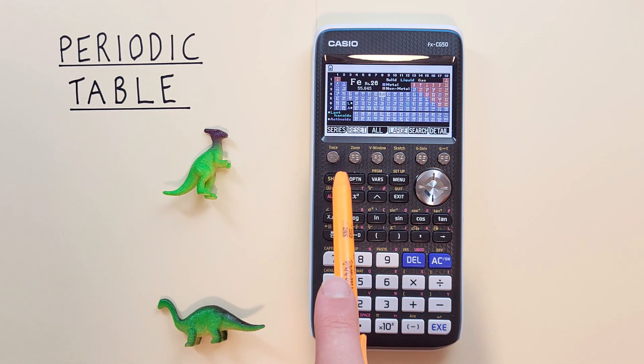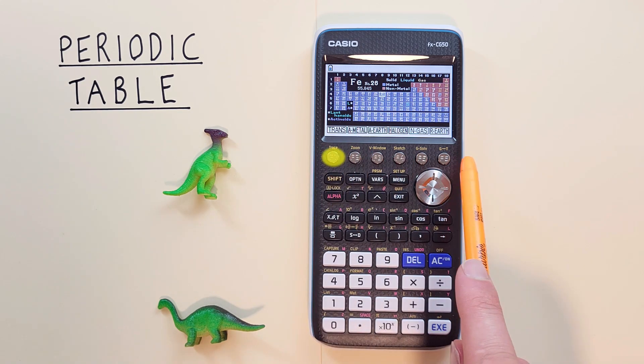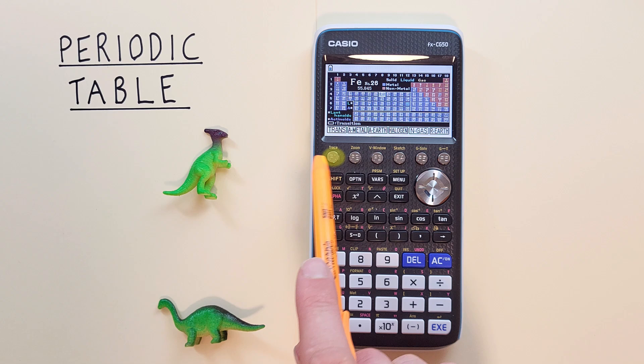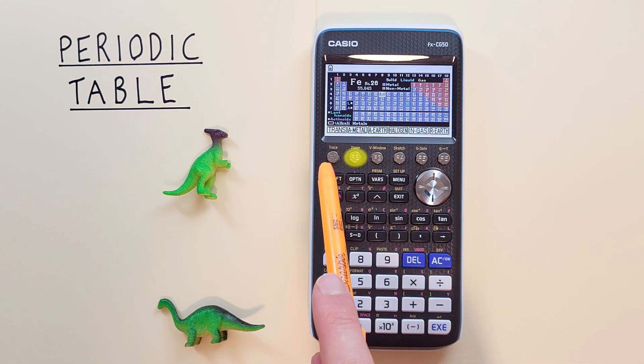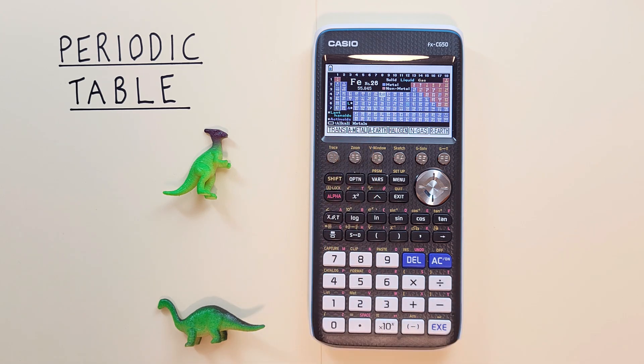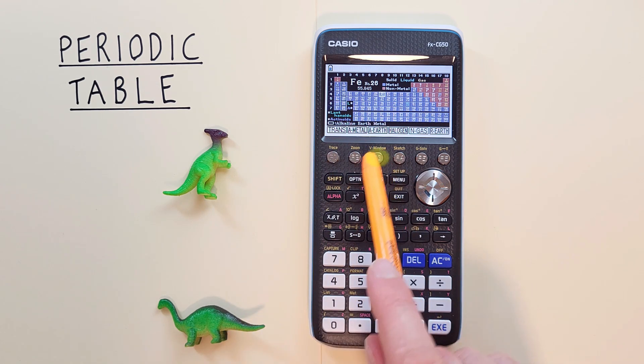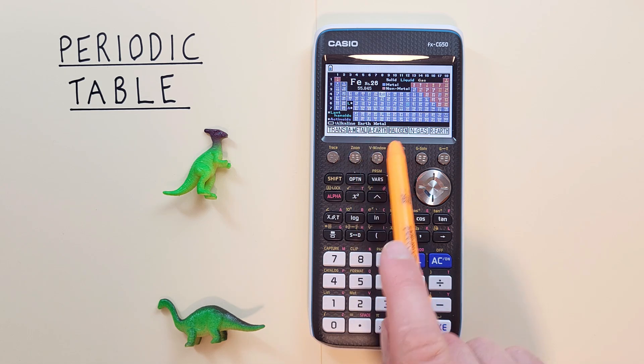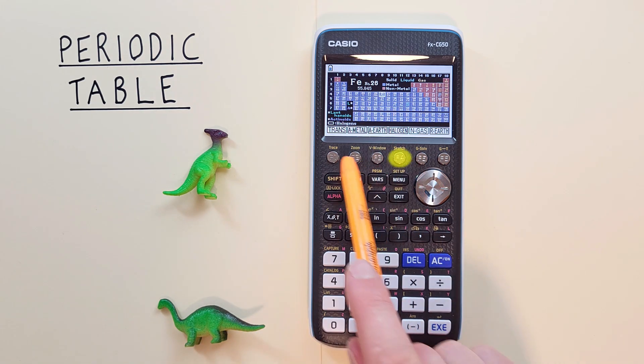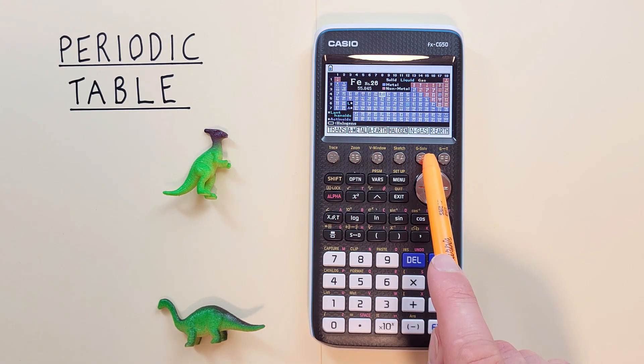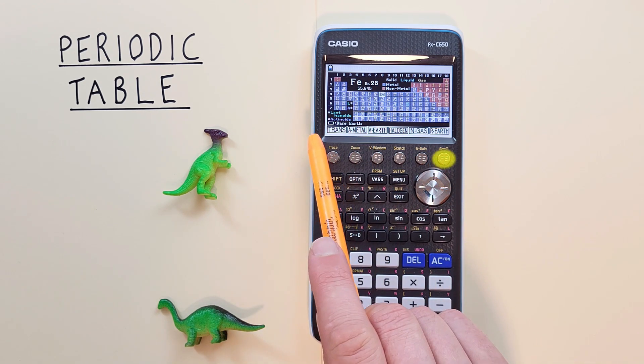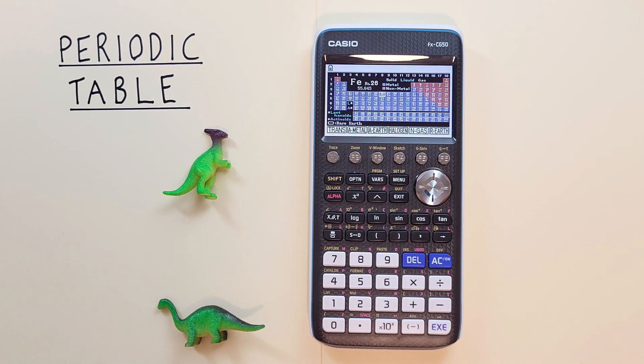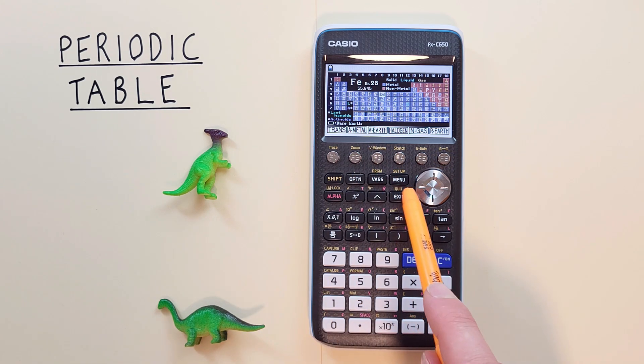We also have the option to highlight different series here. So if we hit F1, we see this menu, where we have F1, transition metals, F2, alkaline metals, F3, alkaline earth metals, F4, halogens, F5, noble gases, and F6, rare earth. And to go back again, we hit the EXIT key.